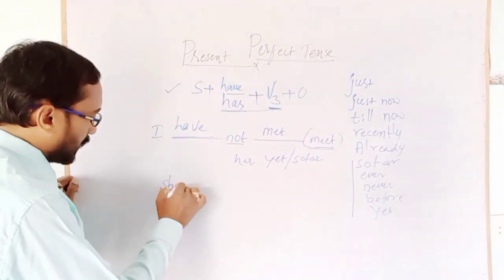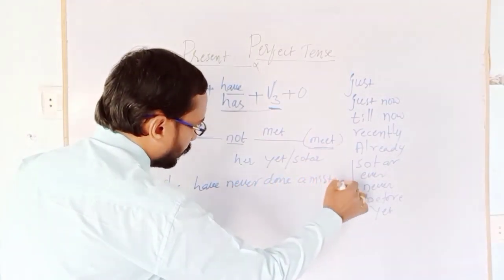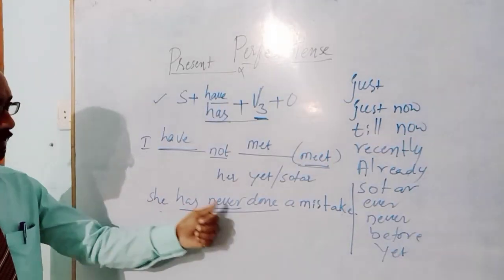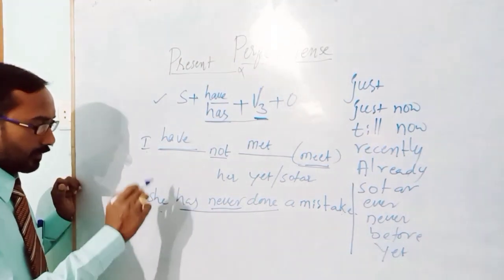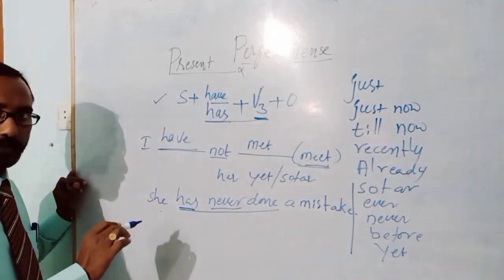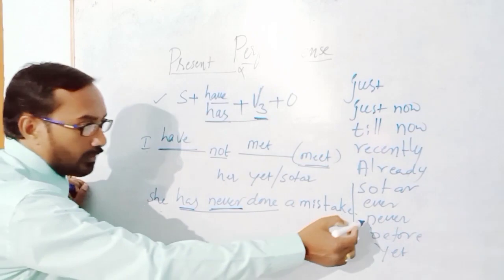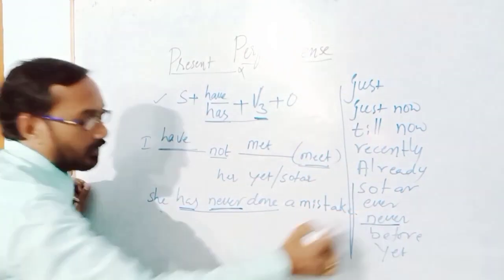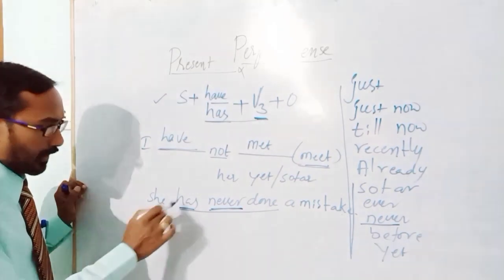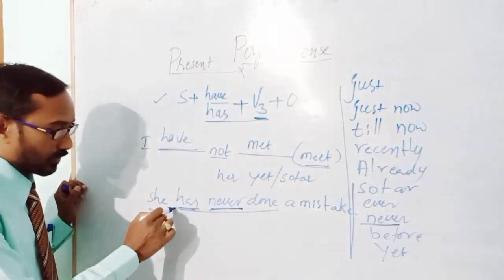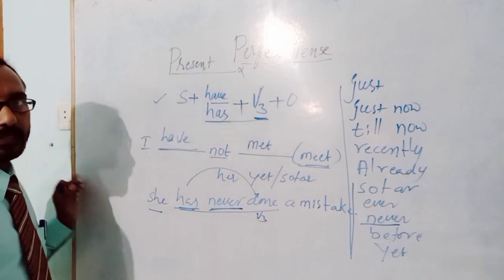One more example: She has never done a mistake. When the question is asked in a negative manner and you see the clue word 'never,' never means negative. She has never done a mistake — even here, after 'has' we use 'done' (V3). This is the present perfect tense.